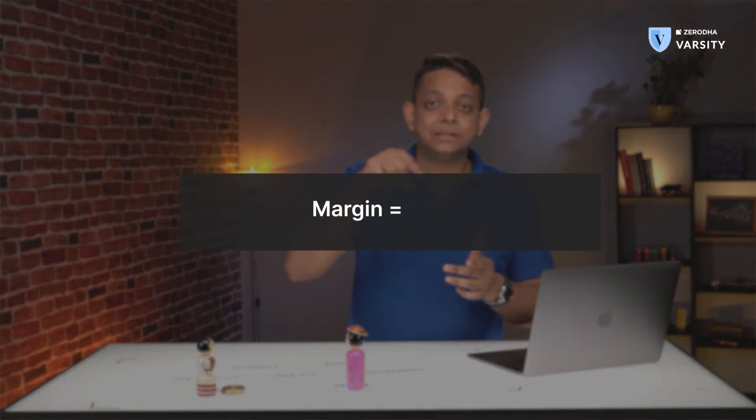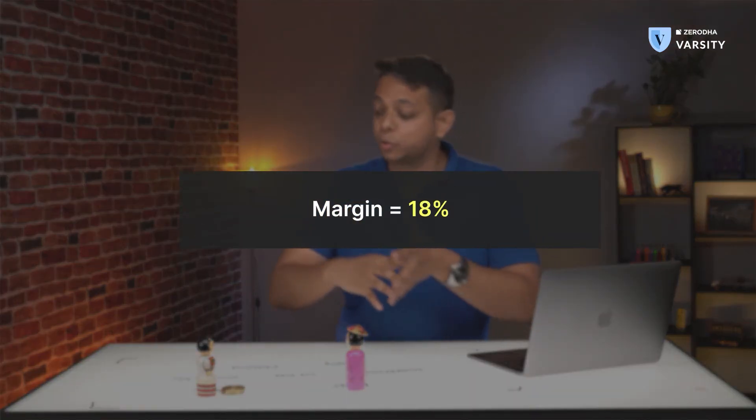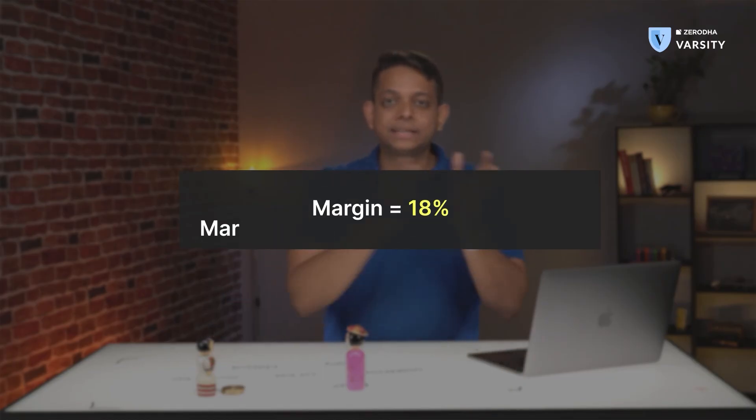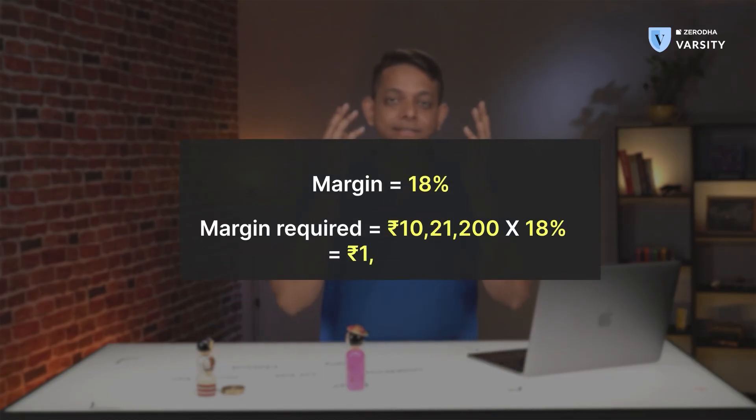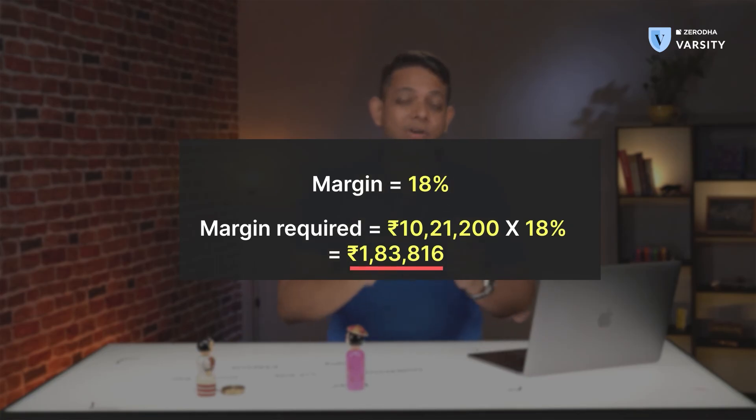Now let's talk about margin. Assuming the margin is 18% of the total contract size, 18% of this number is the margin — the minimum amount that will be blocked to actually trade one lot of Infosys futures. How margin and leverage work in more detail is something we'll discuss in the next video.